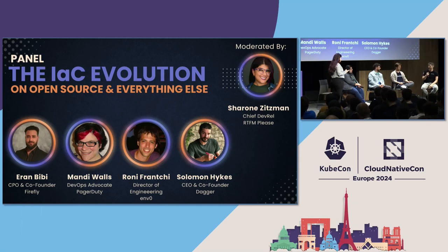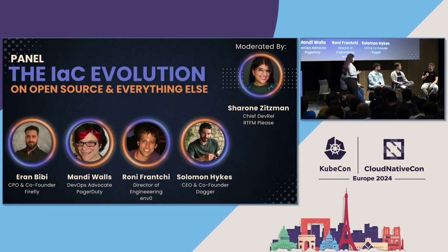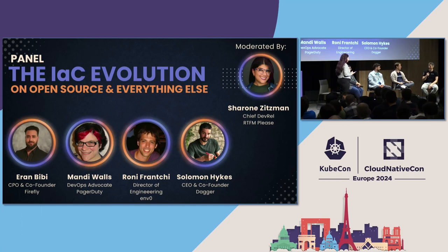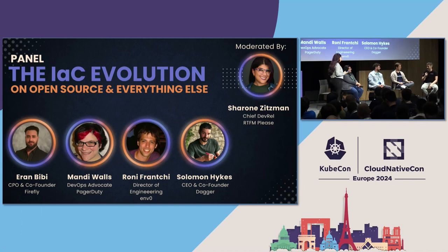We went through that transition at Dagger — we started out with a DSL and then we were forced to go to mainstream languages because people wanted to use that. Now the APIs are becoming powerful enough that you can actually do that. The state part — we don't have state, so I feel lucky in that way because state is a pain. We'll do the stateless pipelines, and everyone else can figure out the really difficult state management part. That's my strategy.